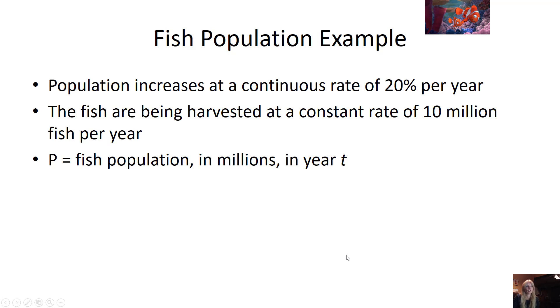So go back, we talked about the population of fish increases at a continuous rate of 20% per year. They're being harvested at 10 million fish per year.